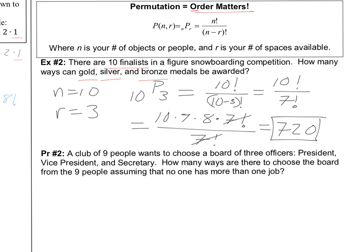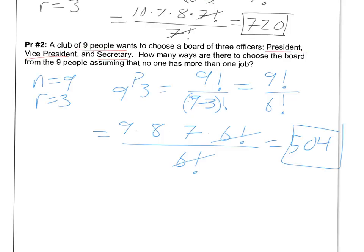Practice: A club of 9 people wants to choose a board of 3 officers — president, vice president, and secretary. How many ways are there to choose the board, assuming no one has more than one job? This is 9 permutation 3 = 9! / (9−3)! = 9! / 6!. Expanding: 9 × 8 × 7 × 6! over 6!, the 6 factorials cancel, giving 9 × 8 × 7 = 504.